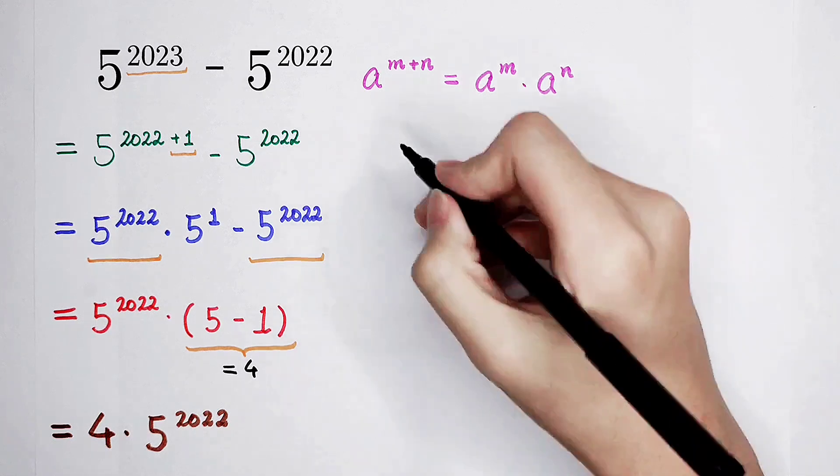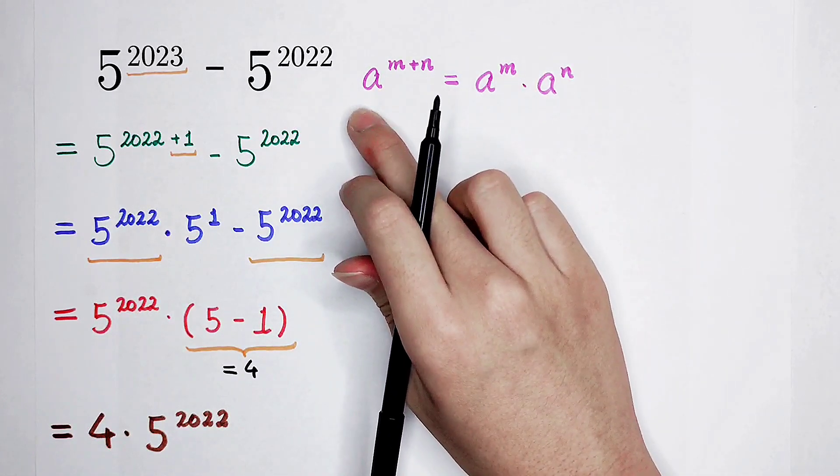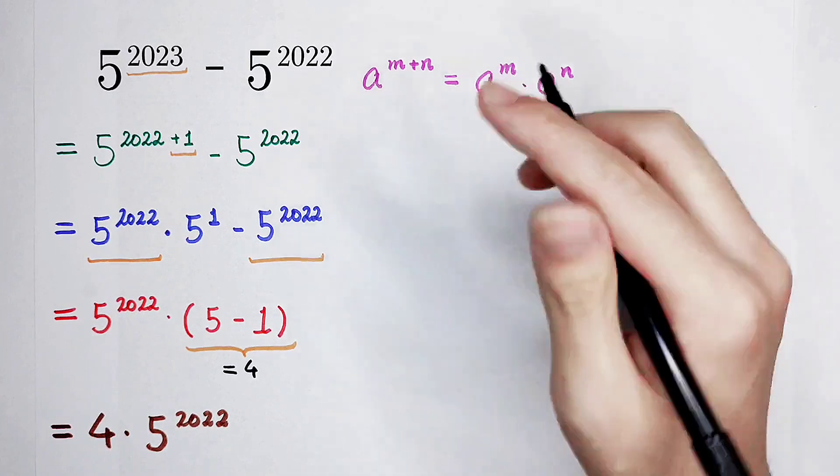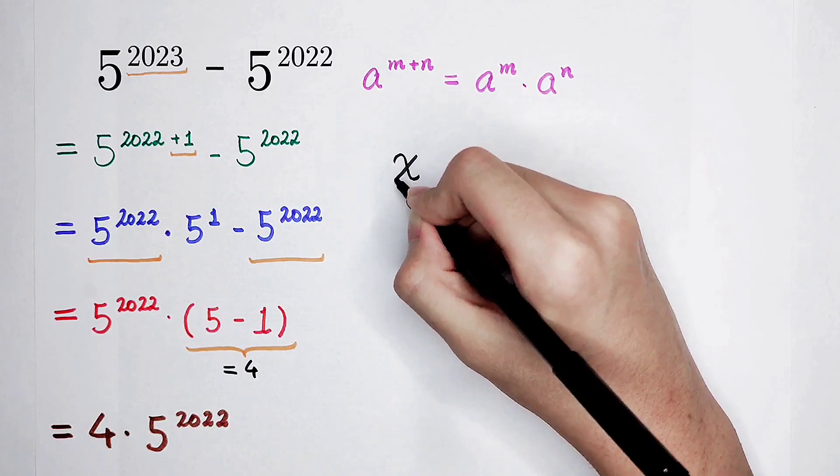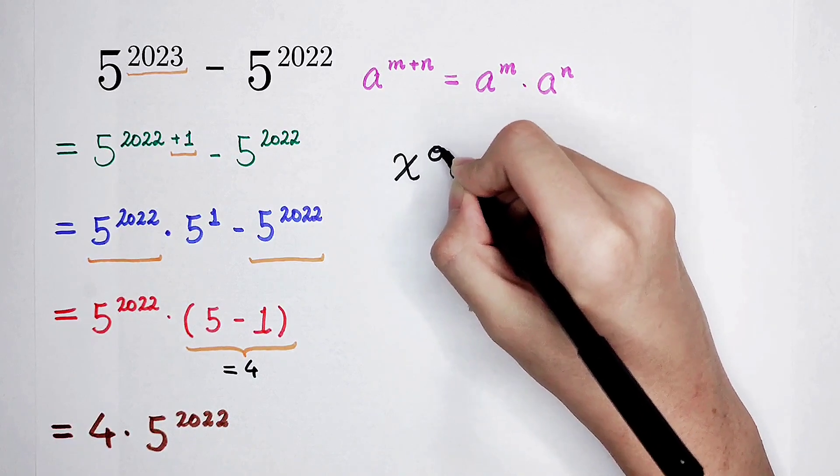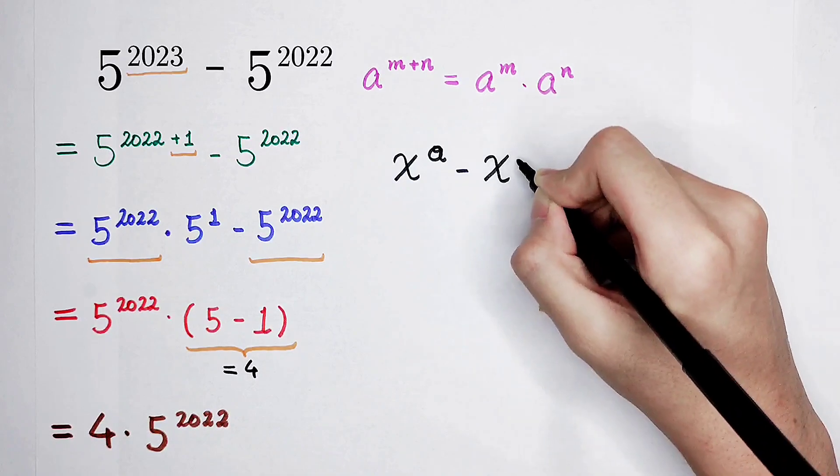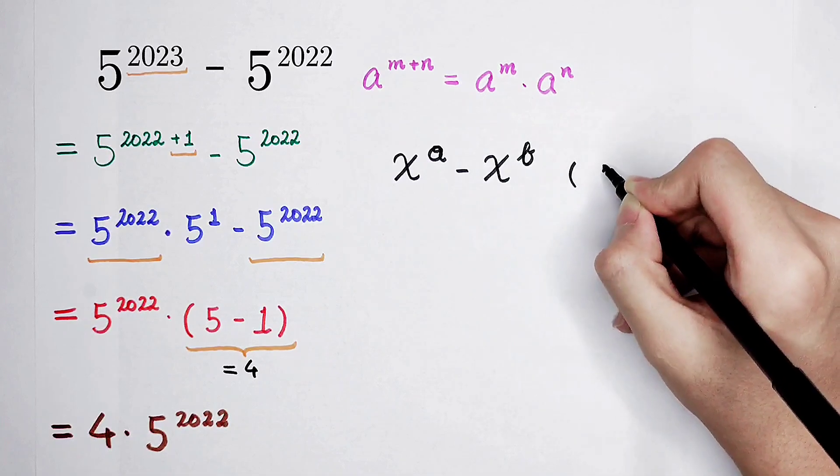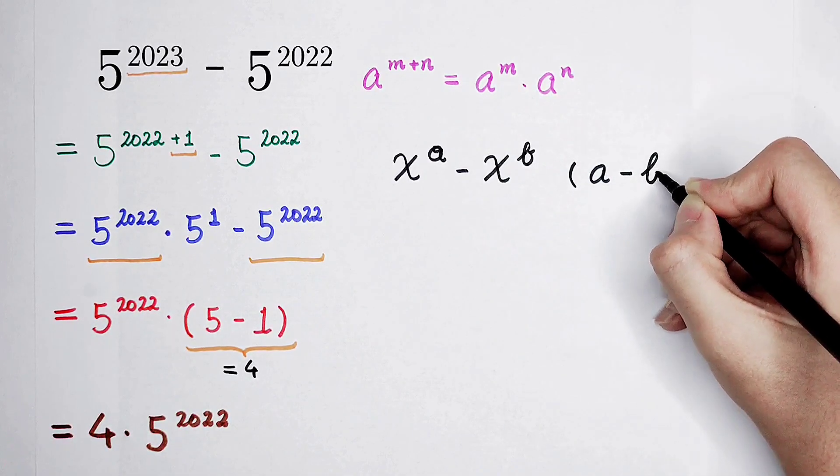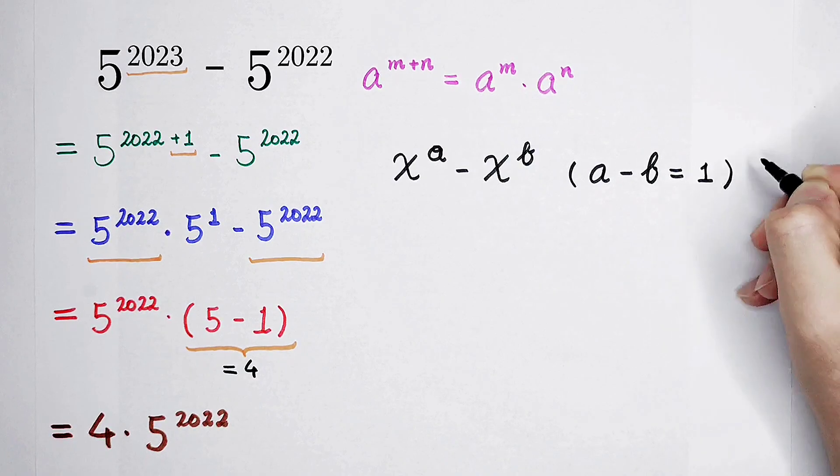Then I have another problem. Of course, we can solve this question, or this kind of question, in general. I want to calculate x to the power of a minus x to the power of b, where the subtraction of a and b is 1.